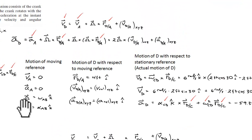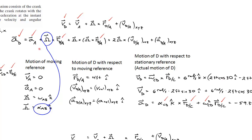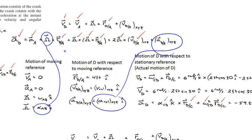I won't complete this in the screencast, but you can do the exact same thing for acceleration to find alpha_AB, the second part of the problem. We now know omega and the velocity of D with respect to A in the rotating coordinate frame. We don't know the relative acceleration in x, y, z, but we have two equations and two unknowns after evaluating the multiple cross products in the i-hat and j-hat directions. You can solve for alpha_AB.